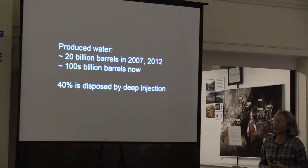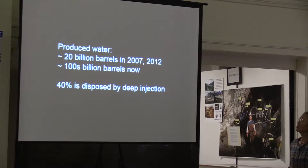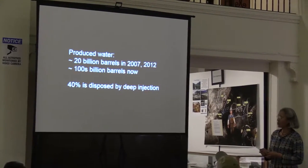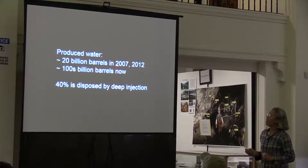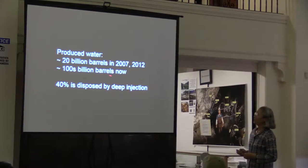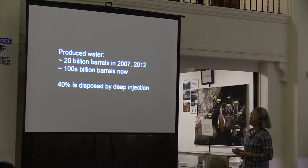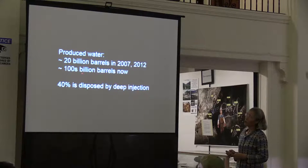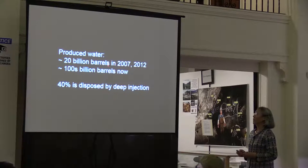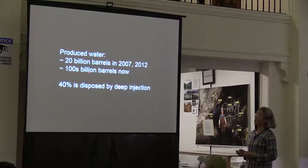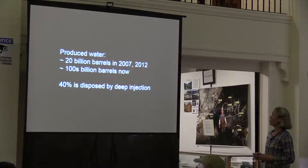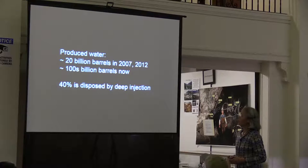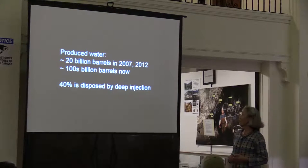To put some numbers in perspective, in terms of produced water in 2007 and an estimate in 2012: the U.S. produced about 20 billion barrels of produced water. The estimate now — we don't have an exact number — is probably in the hundreds of billions of barrels, so we take that estimate with a grain of salt. About 40 percent of this water is disposed by deep well injection.